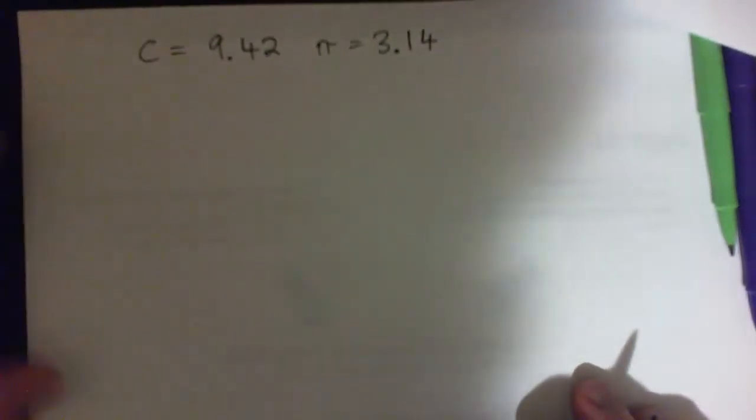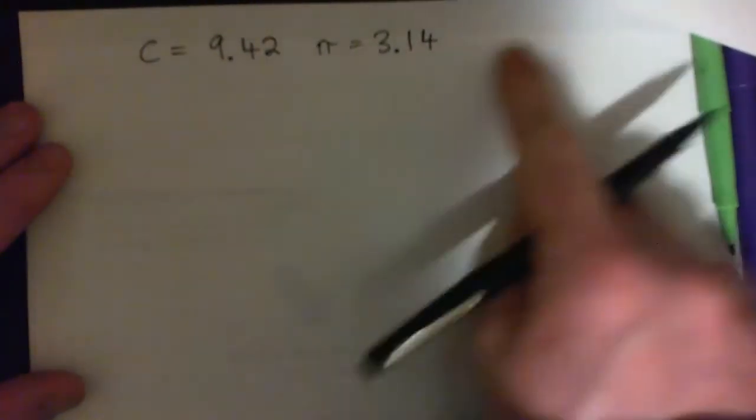Okay, so I'm just going to do this question with you as well. Circumference is 9.42, pi is 3.14.